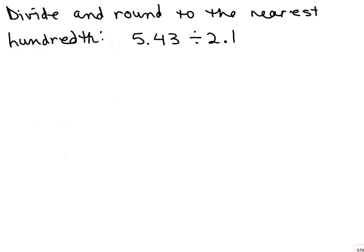We're going to do some more problems dividing by decimals and then I'll show you some cool things you could do when you're dividing by numbers ending in zero. Let's say we have this problem: 5.43 divided by 2.1 and it says to divide it and round to the nearest hundredth.